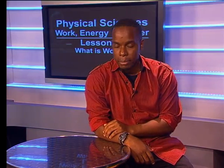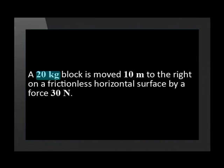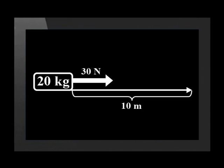Let us look at some examples of how the definition of work can be illustrated. A 20 kilogram block is moved 10 meters to the right on a frictionless horizontal surface by a force of 30 newtons. When a 30 newton force is applied on the 20 kilogram block, the block moves 10 meters in the direction of the force, and therefore work is done on the block.